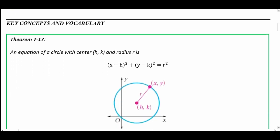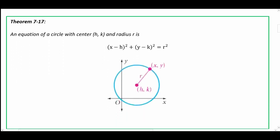We're going to start right off the bat with Theorem 7-17. Theorem 7-17 states that an equation of a circle with center at (h, k) and radius r is defined as: (x − h)² + (y − k)² = r².